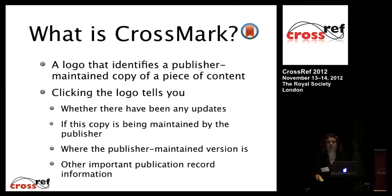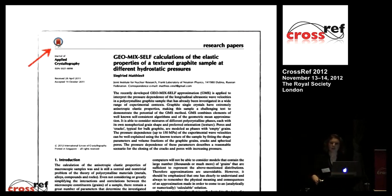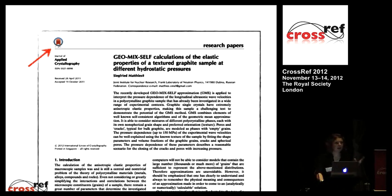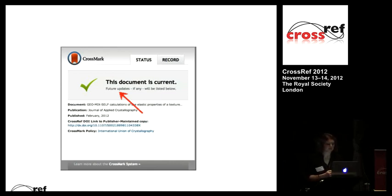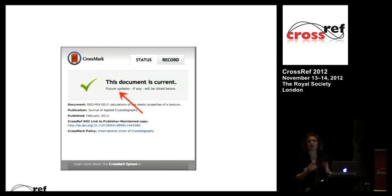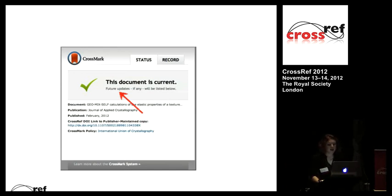The best way to explain Crossmark is to show some examples. I've got a PDF here from the Journal of Applied Crystallography, who were one of the participants in the pilot. Maybe this came from my hard drive, from the author's website, an institutional repository, my email, or my Mendeley account. At any rate, I've got the PDF and I've got the Crossmark logo in the upper left-hand corner. If I'm online and click on it, I get a dialogue box telling me the document is current, and flagging that future updates, if any, will be listed below — getting people used to the idea that this is where they find that information.